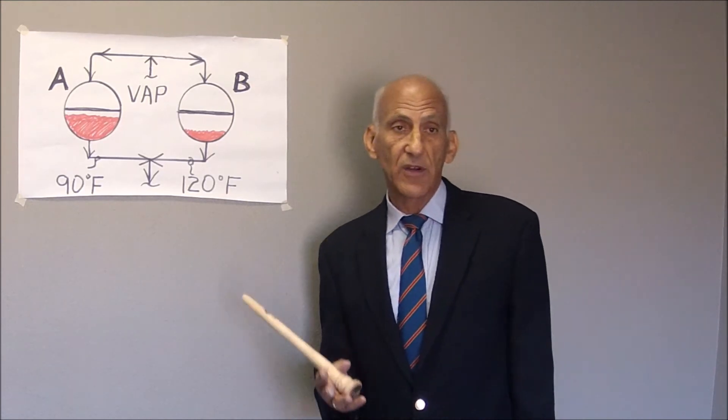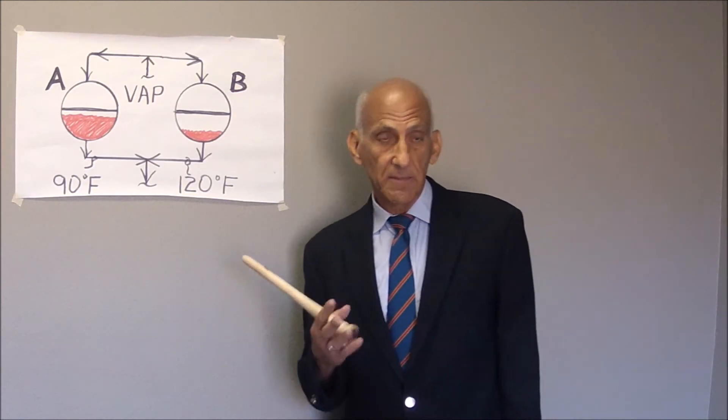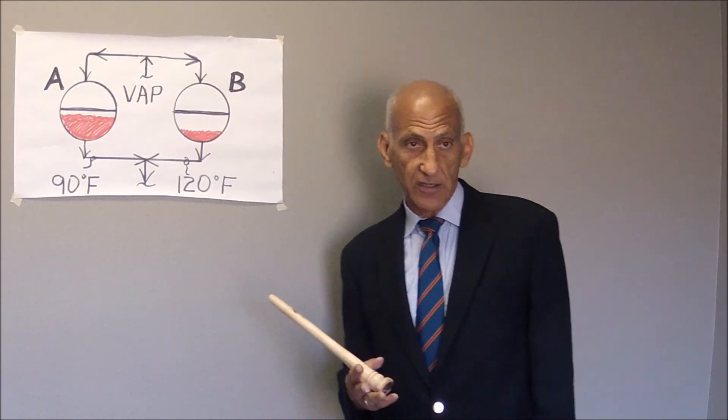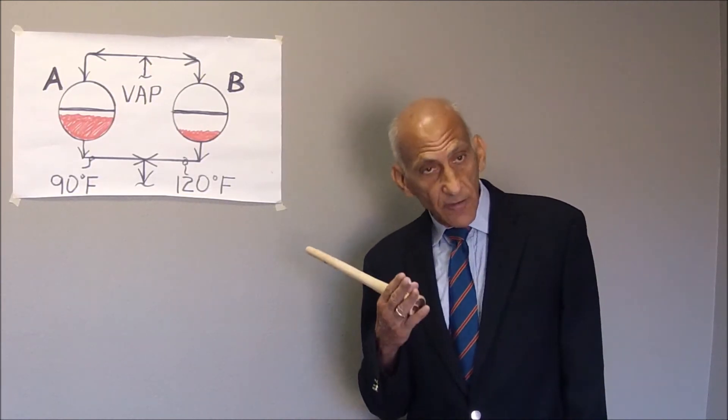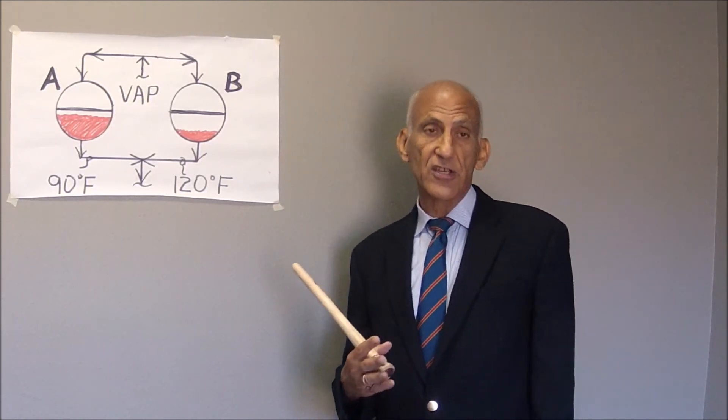How does one identify this problem with condensate back up in the field? Well, simply take your infrared temperature gun and look for a temperature gradient on the exterior shell side of the condenser